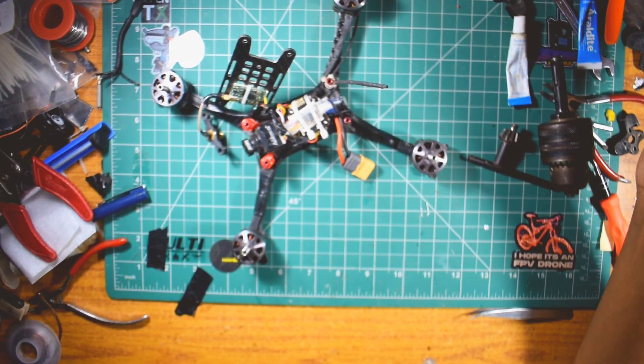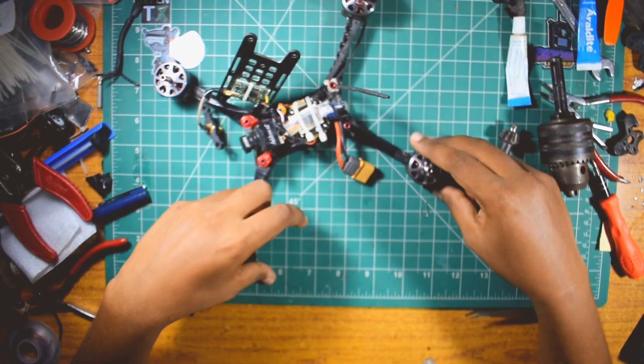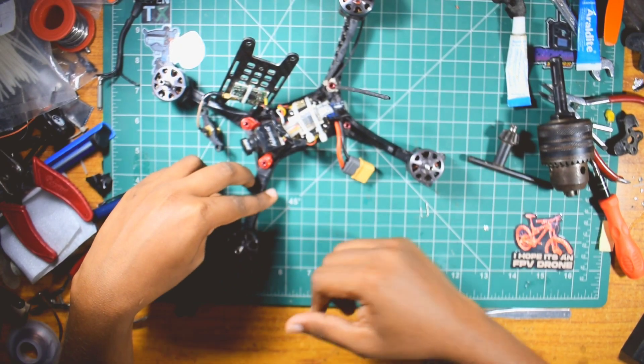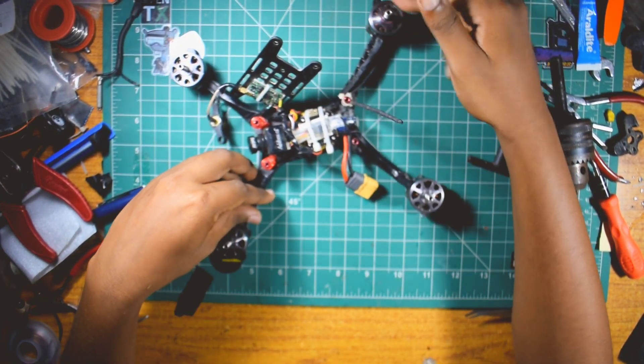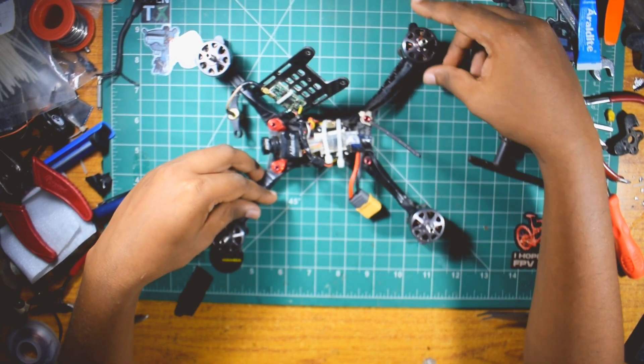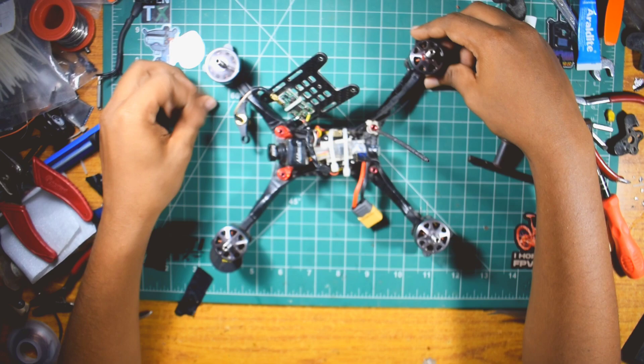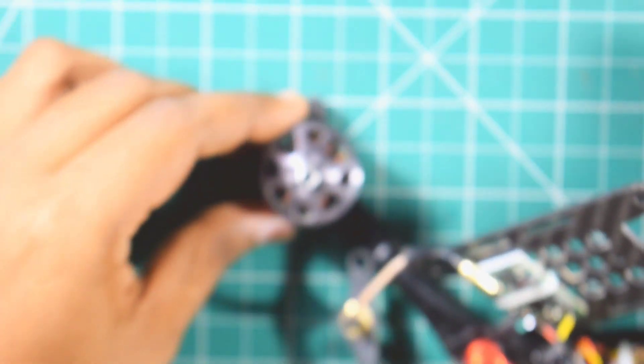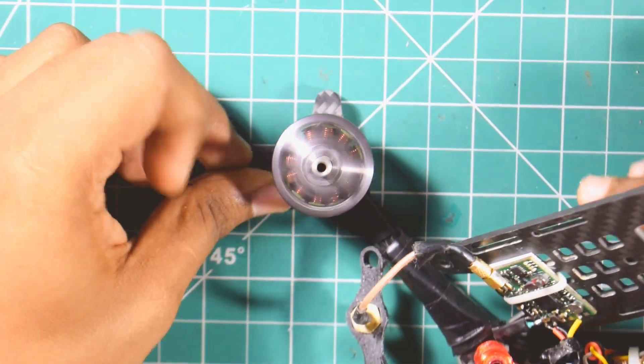So what this will do is this will bring some motor vibrations and might cause some jellos in your action camera footage. I don't know for sure if by using an ND filter we can solve that jello problem, but yeah, if you feel there's a lot of motor vibrations, then you can definitely go for newer motors.